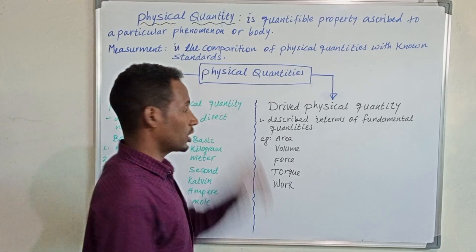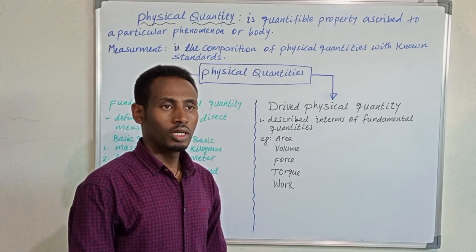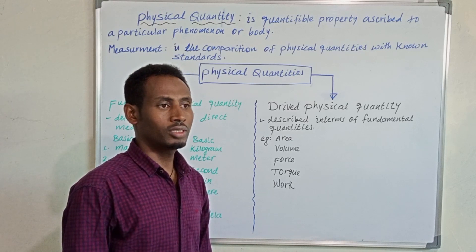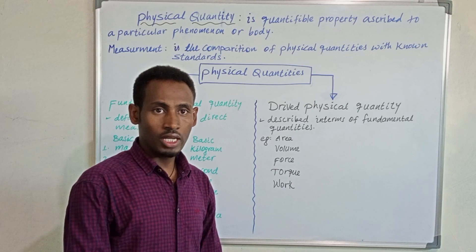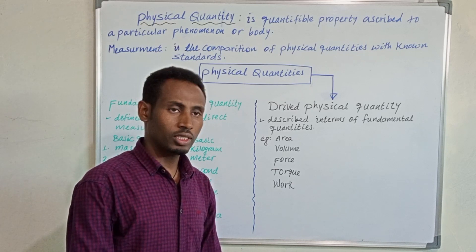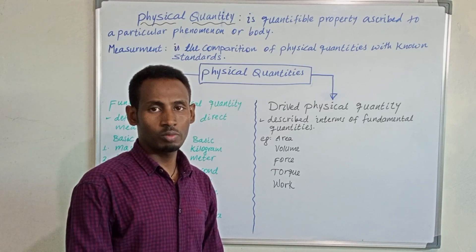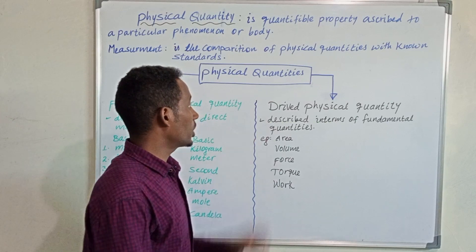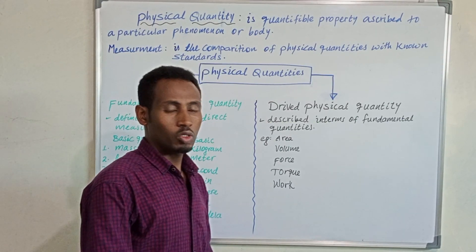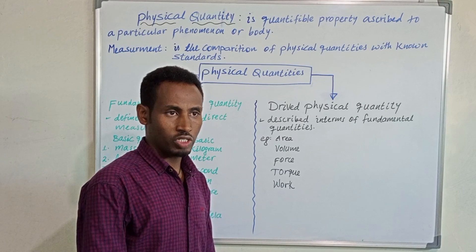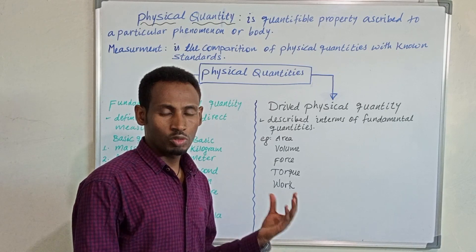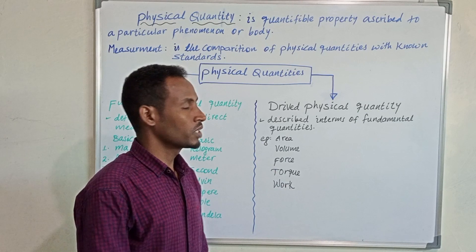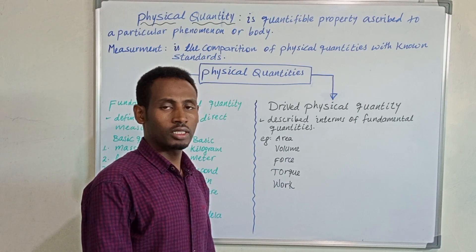The first thing in this chapter is about physical quantity. A physical quantity is a quantifiable property of matter or a quantifiable property of phenomena. This quantifiable property of an object will be derived from measurement.